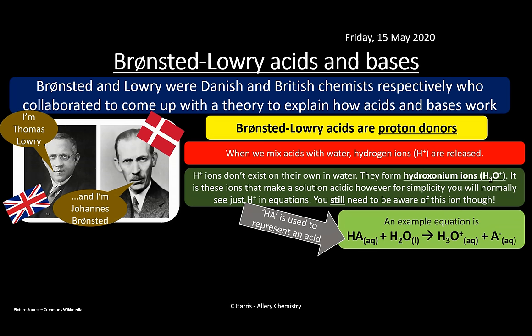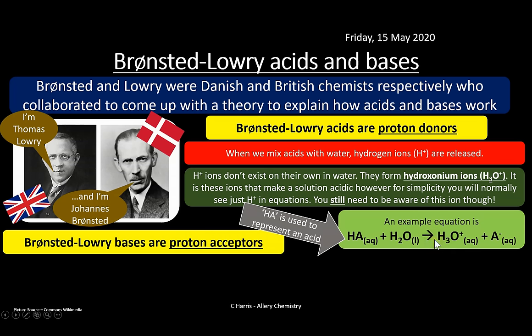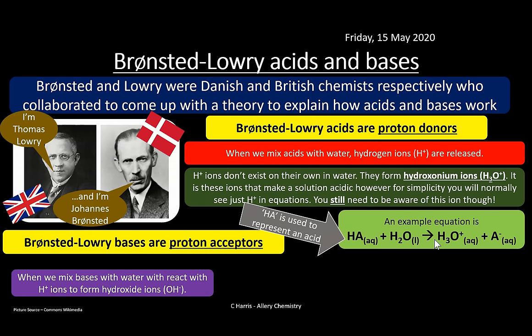Here's an example equation: HA is used to represent an acid, and reacting with water forms your hydroxonium ion and A⁻. This is typical of an acid reaction - how we produce these hydronium or hydroxonium ions. They've got two names, which is why I keep flipping between the two. Bronsted-Lowry bases are proton acceptors, so acids are proton donors and bases are proton acceptors.